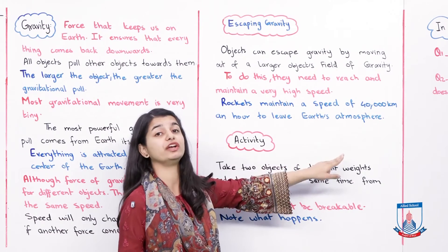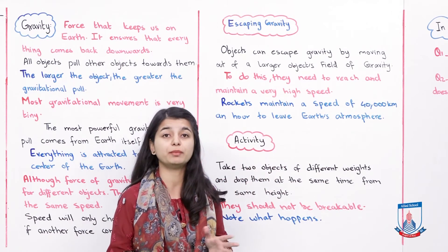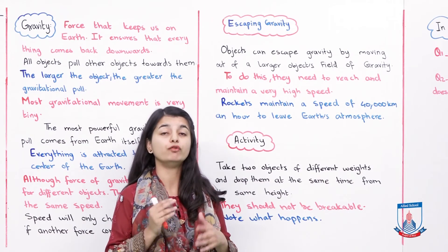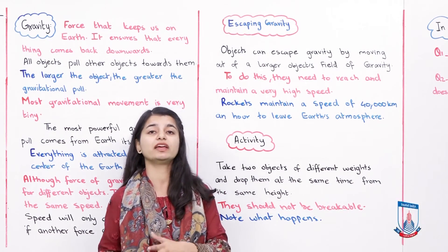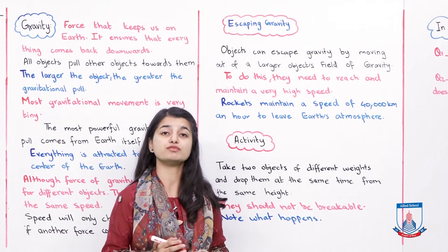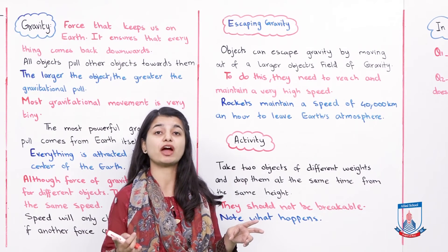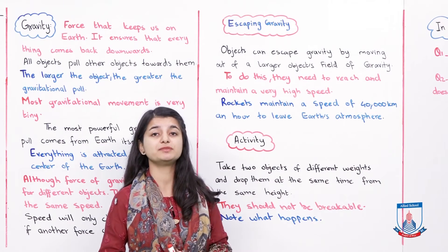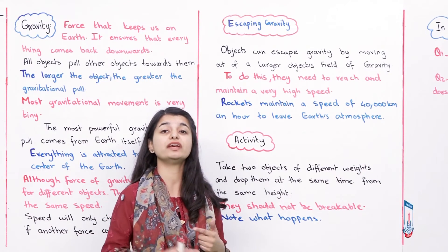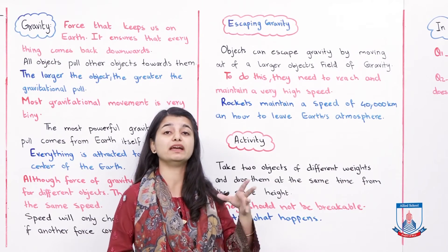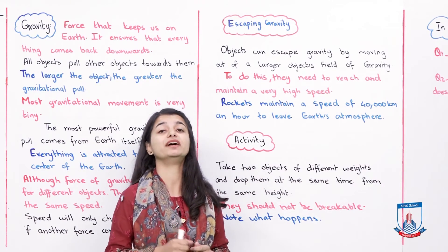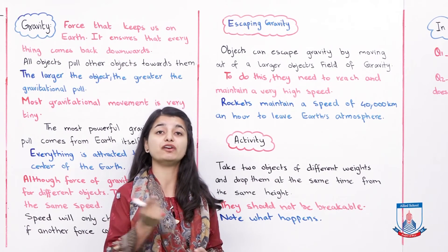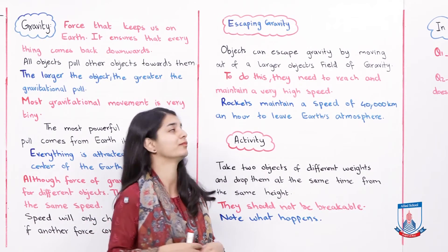Rockets maintain a speed of about 40,000 km per hour to leave Earth's atmosphere. Your car is fast, but it only goes about 120 km per hour. A rocket travels 40,000 km in one hour — that speed is so high that it overcomes Earth's gravitational force. The rocket must maintain that 40,000 km per hour continuously to escape Earth's gravitational pull and leave the atmosphere.